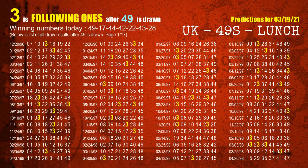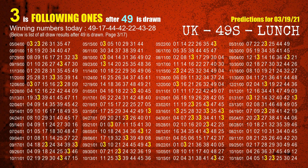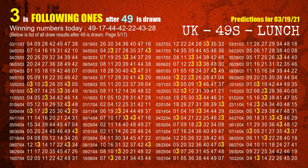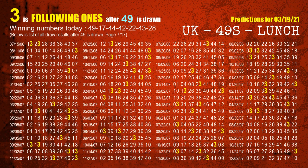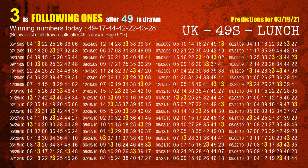First, we'll find out the following ones through today's result. Following numbers refer to those numbers being picked on the next draw after this one, and following ones are the units digit of those following numbers. The first winning number is 49. We list all draw results which are after a draw with 49 as a winning number. The most frequently following units digit is 3 when 49 is the winning number in the last draw. We already highlight the units digit 3 in yellow for you.